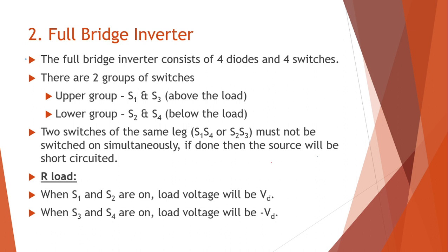In the previous class we had learned about the half bridge inverters, and the working of the full bridge inverter is similar. The only difference is that in your full bridge inverter you have four diodes and four switches, whereas in your half bridge inverter you had only two diodes and two switches.